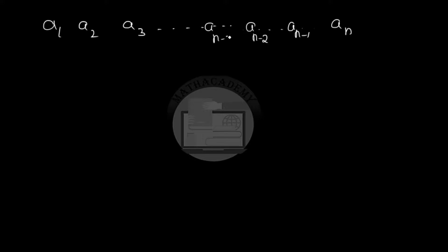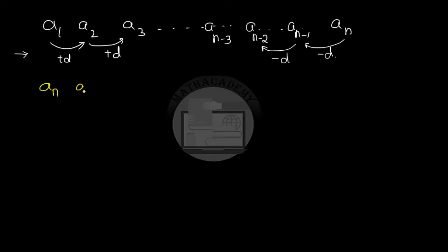Now let us see one more way to solve this problem. Suppose we have a sequence a1, a2, a3, and so on with last term an. We want the fourth term from the end, so we look at a(n-1), a(n-2), and so on. When we go in the sequence in the forward direction we always add the common difference. So when we go in the reverse direction, to get a(n-1) from an we subtract the common difference. We change the direction of the sequence: the first term becomes an and the last term is a1.